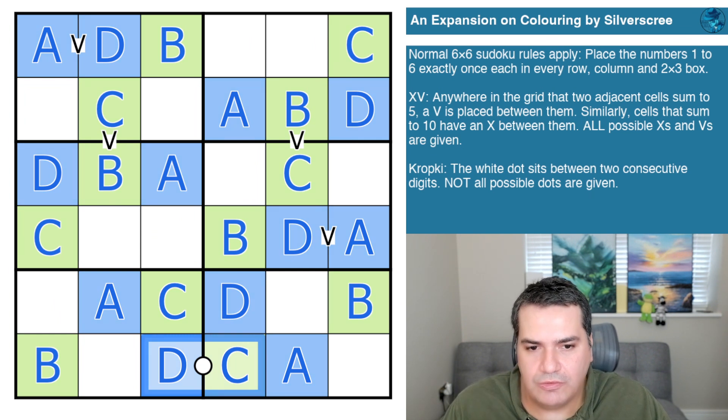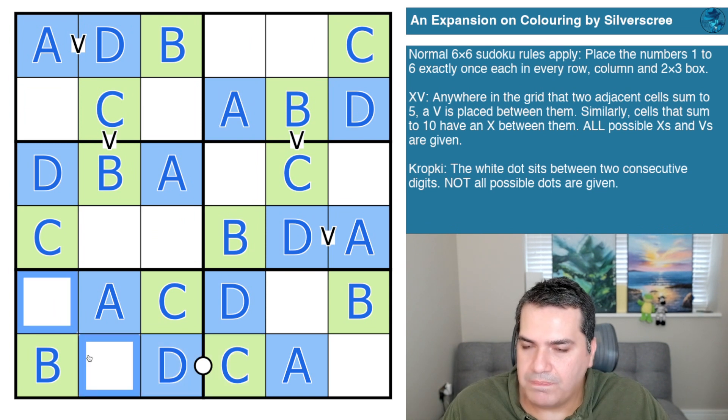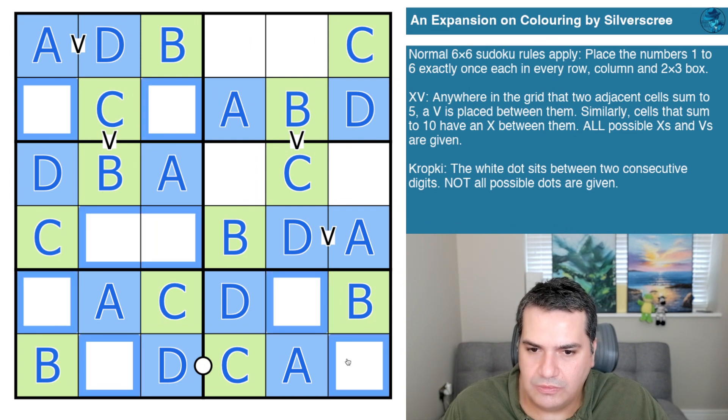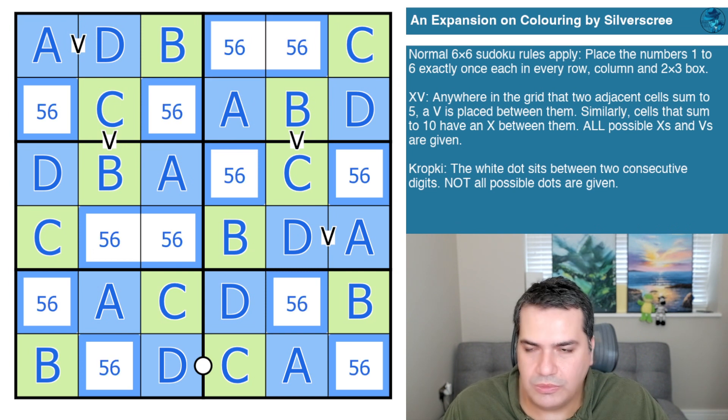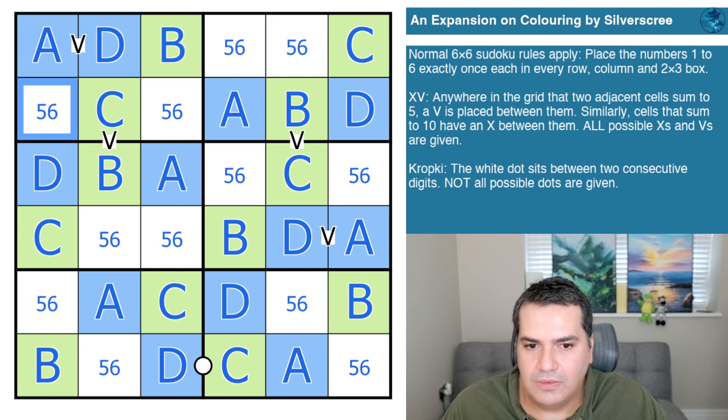Obviously I don't know what these numbers are. Just normal Sudoku, I can kind of complete it fairly quickly. Now we've got this white Kropki dot that's meant to help us understand everything.